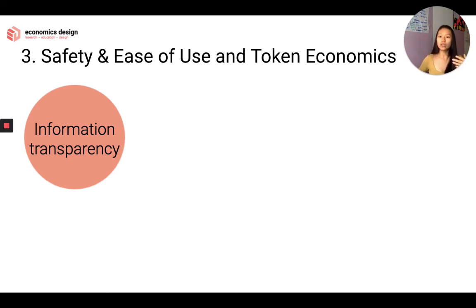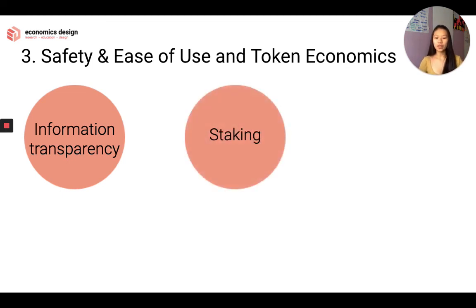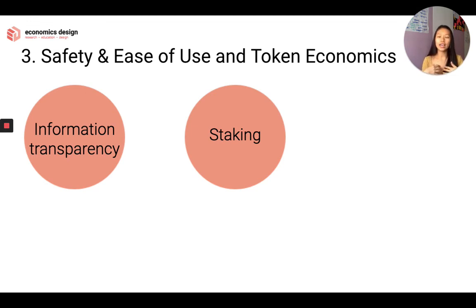Lastly, safety and ease of use. We want to make it easy for people to join and safe for them to use the system. First is information transparency — also called a reduction in information asymmetry, where one person has more information than the other. How can we increase information transparency and share more information with parties before transacting? Then staking: proof of stake, safety deposits, having skin in the game — people will less likely misbehave. If I expect people to misbehave less, I feel safe using the system. Examples include Algorand and Ethereum.